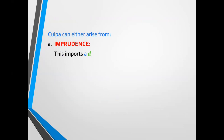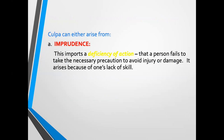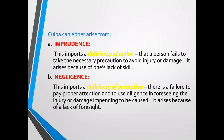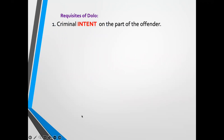Now on to the types of culpa. The wrongful act may result from imprudence or negligence. When we talk about imprudence, this imports a deficiency of action — a person fails to take the necessary precaution to avoid injury or damage, and it arises because of one's lack of skill. When we talk about negligence, this imports a deficiency of perception — there is a failure to pay proper attention and use diligence in foreseeing the injury or damage impending to be caused, and it arises because of lack of foresight.